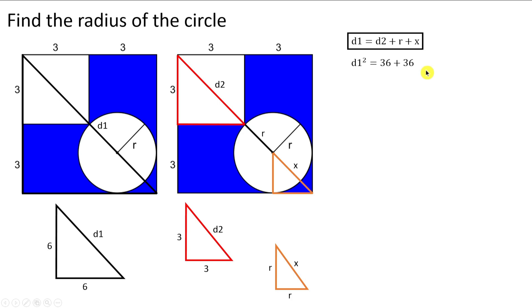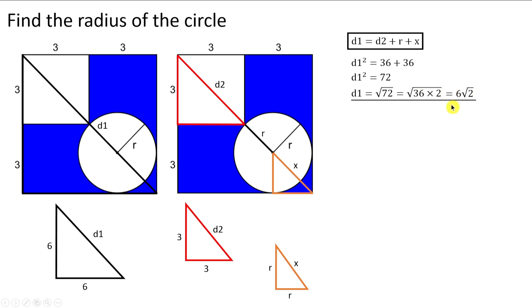Let's find d1. d1² = 6² + 6² = 36 + 36 = 72. Taking the square root, d1 = √72. Since 72 = 36 × 2, we can rewrite this as d1 = 6√2.